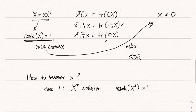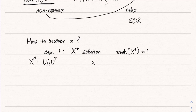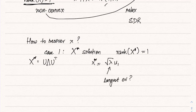If rank(X*) = 1, we relaxed to X ⪰ 0 but we obtained a rank-1 solution anyway, so the relaxation did not hurt. We can recover x by eigenvalue decomposition of X*: take the single non-zero eigenvalue and its corresponding eigenvector — that is our x*. Sometimes even when rank is not equal to 1, people take the largest eigenvalue and its eigenvector, which also works as a good approximation in many cases.